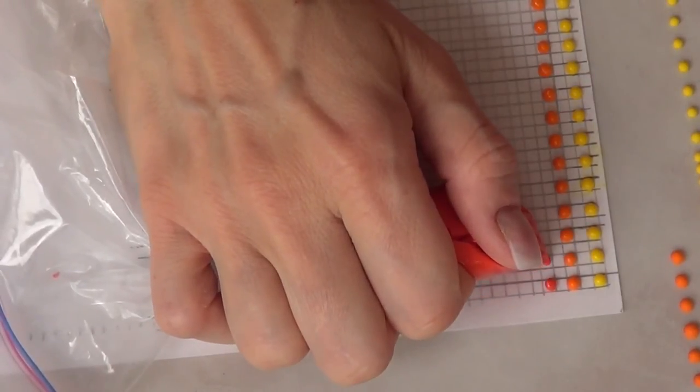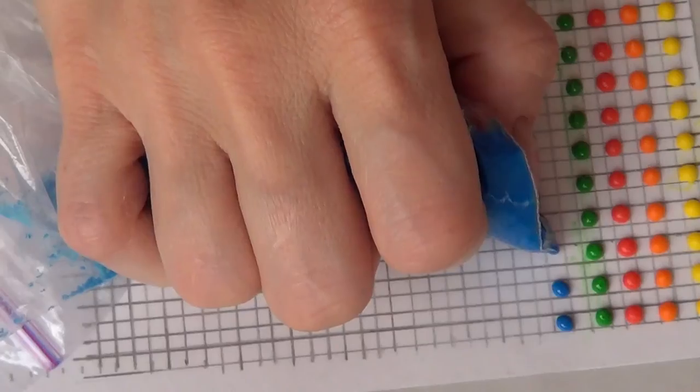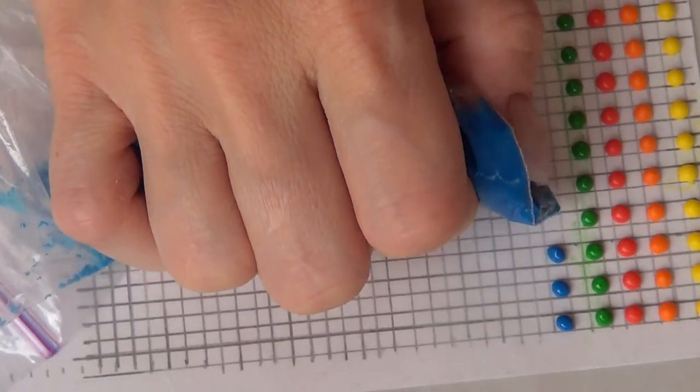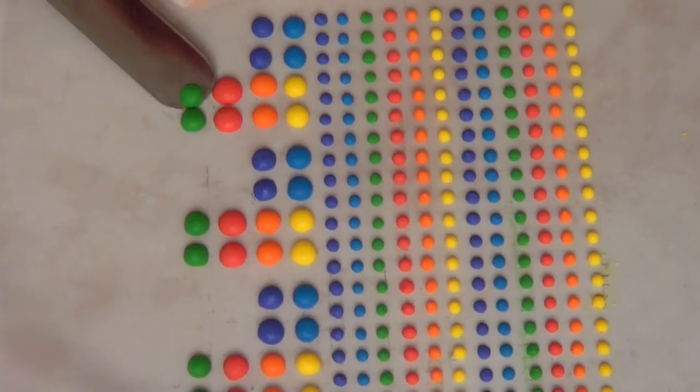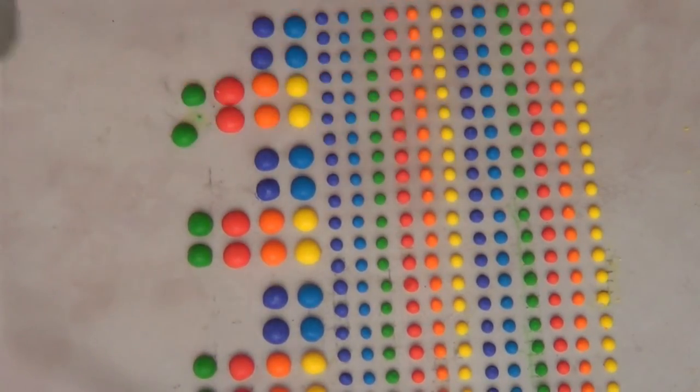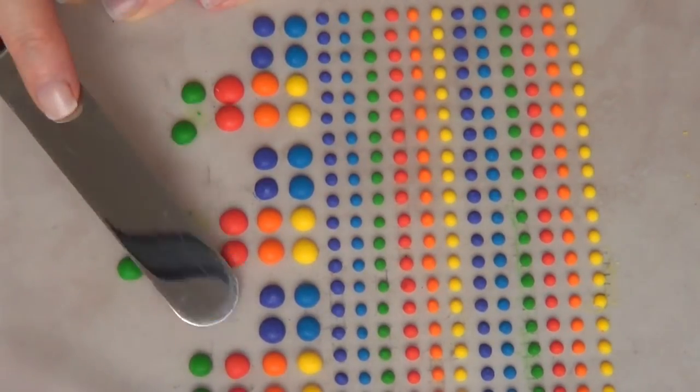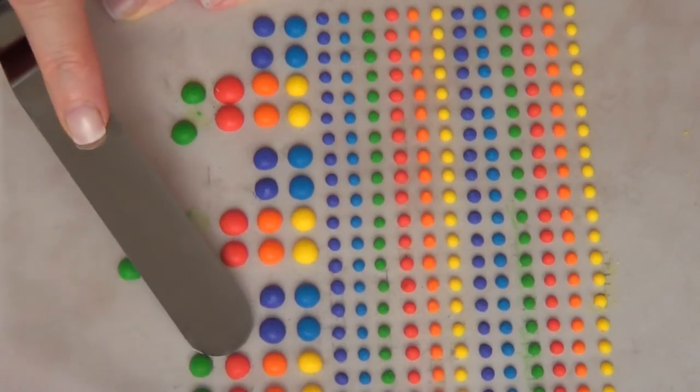I'm just going to keep on doing that with all my colors. I wanted to go for the rainbow shades. Then I ended up doing bigger sprinkles by using four squares instead of just one. So four squares are going to give you a sprinkle the size of the biggest sprinkles that you can see right now.